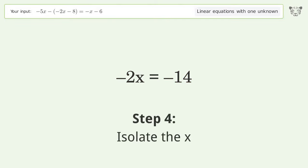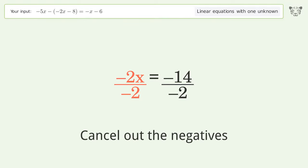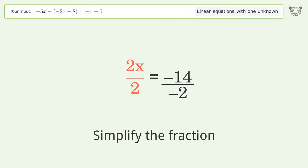Isolate the x. Divide both sides by negative 2. Cancel out the negatives. Simplify the fraction.